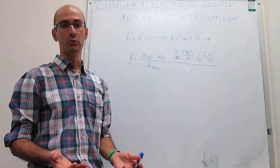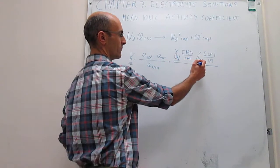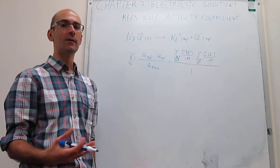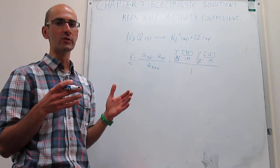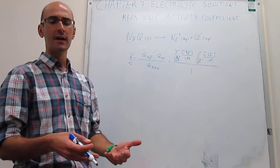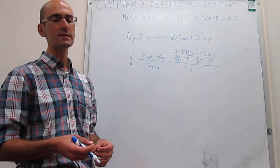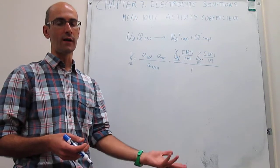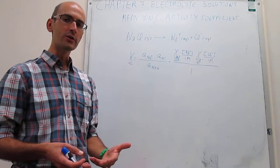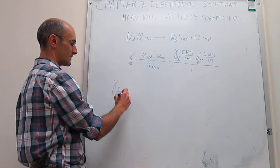The question is, how do you determine these activity coefficients? The problem is that it is very difficult to determine them in isolation, because it is virtually impossible to generate a solution in which you have only a positive ion or only a negative ion — you're always going to have counter-ions. When you make measurements, you see the effect of both together. So instead of using the individual activity coefficients, what we use is something called the mean ionic activity coefficient, γ±.